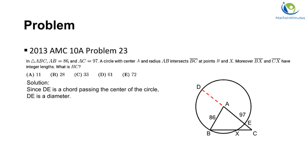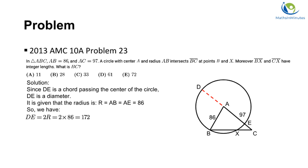Since chord DE passes through the center of the circle, DE is a diameter. The radius of the circle is 86, so AE is a radius equal to 86, and DE is a diameter equal to 172.